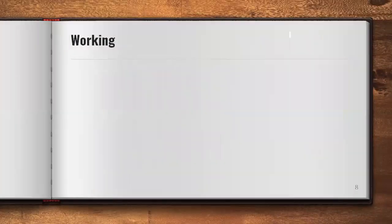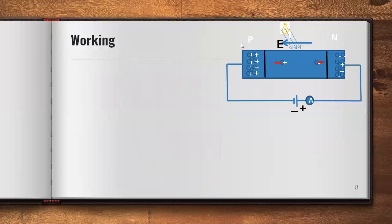This is a working diagram of the PIN photodiode. The P, I, N regions are connected in reverse bias — P is connected to the negative terminal of the battery and N is connected to the positive terminal. An electric field is developed across the diode, and the strength of the electric field depends upon the strength of the reverse bias voltage. As you keep increasing the voltage, the depletion region width also increases.